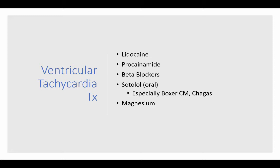If the rhythm is affecting perfusion or risks degenerating into ventricular fibrillation, we will treat medically. Our first choice for dogs is lidocaine; our first choice for cats is procainamide. In dogs, if lidocaine is not working, we'll often add procainamide. Other options include beta blockers; sotalol is one we prescribe orally for boxers with cardiomyopathy and dogs with Chagas disease. And don't forget magnesium — it can be a phenomenal treatment, especially if you don't have access to lidocaine and procainamide.